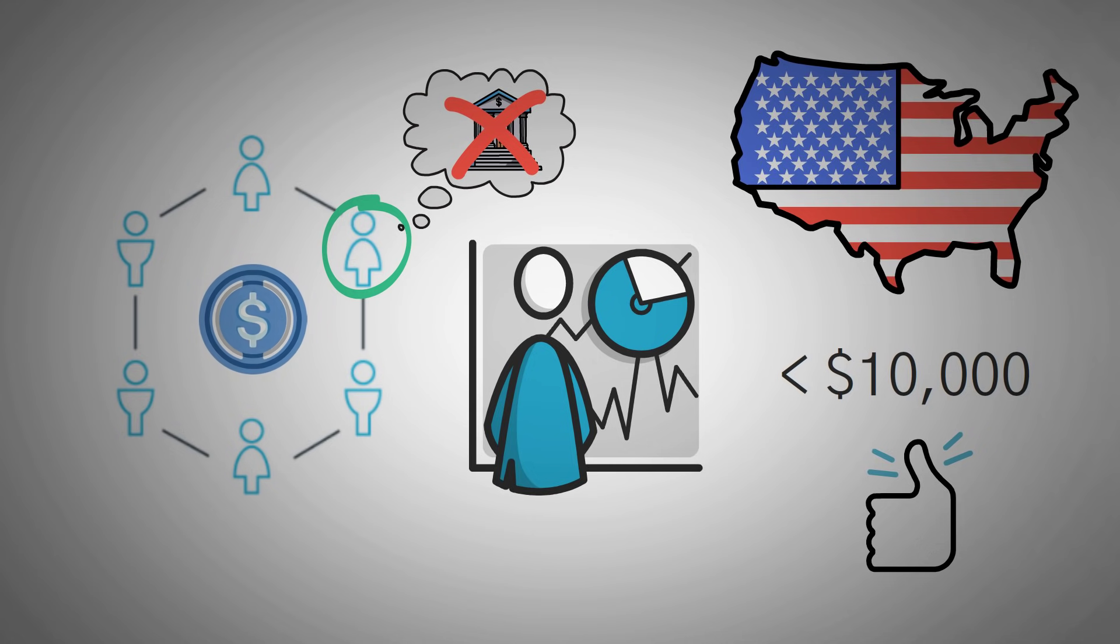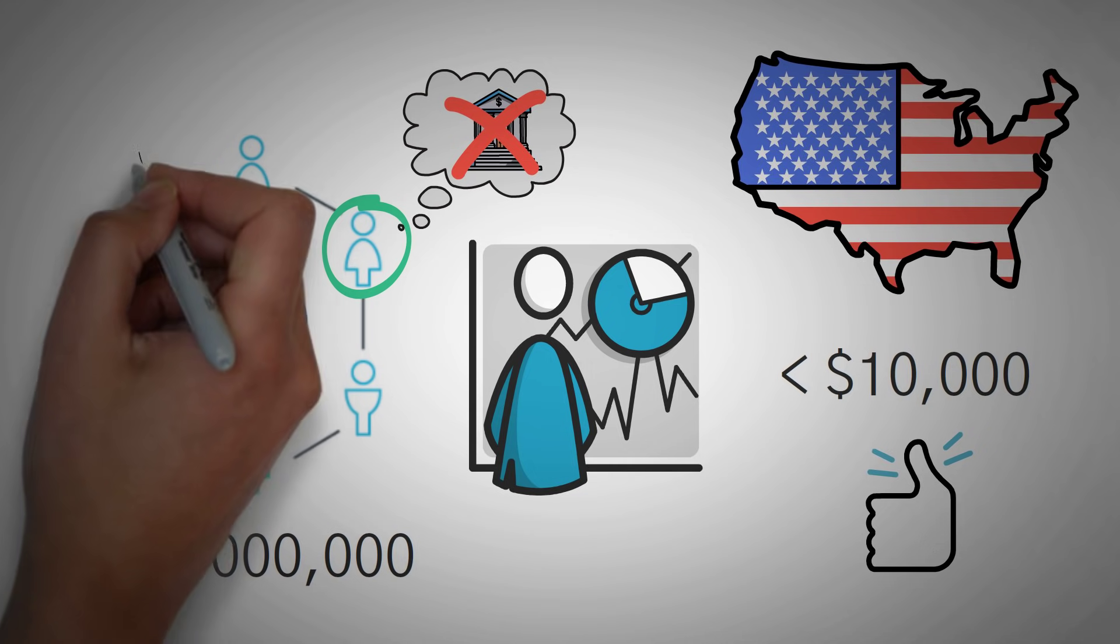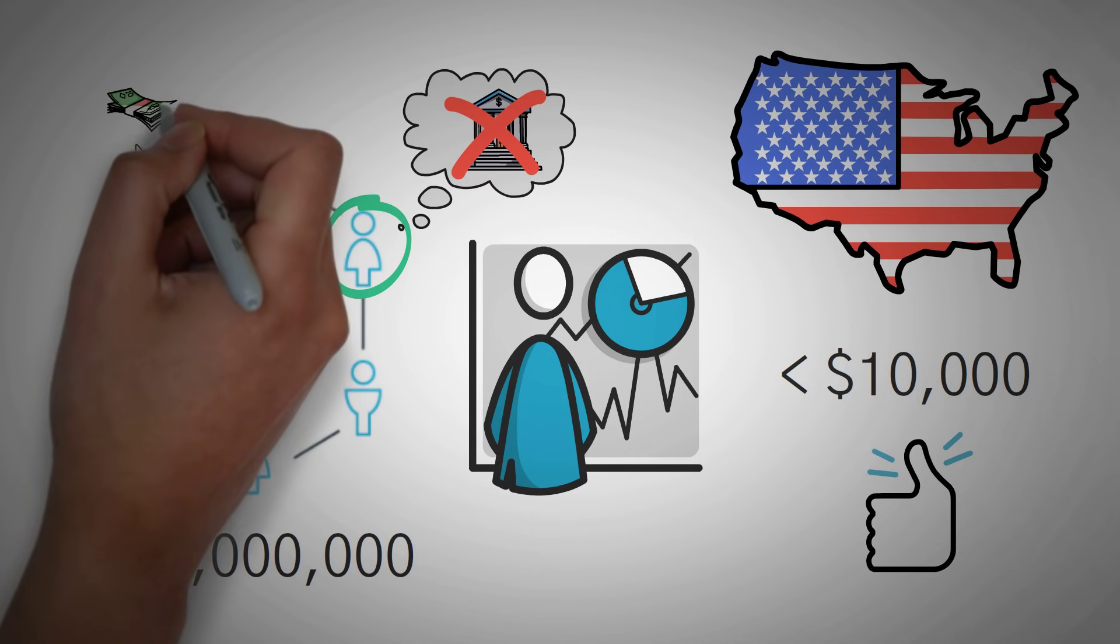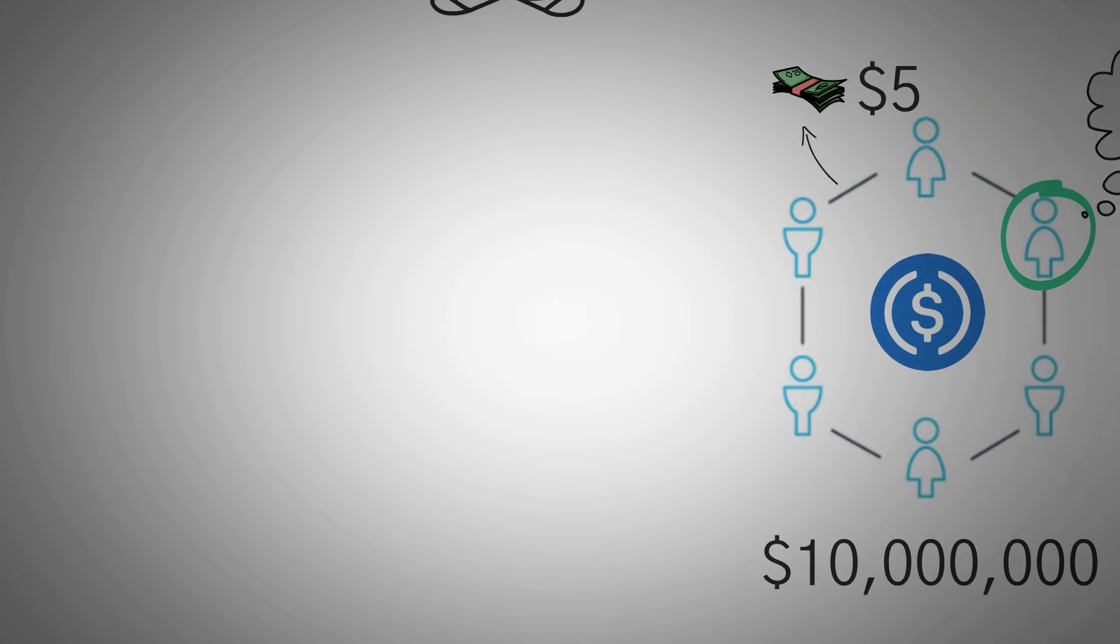Meanwhile, using a stable coin like USDC, you can move $10 million from one address to another without anyone blinking an eye for like a $5 fee. You could never do that with United States dollars.